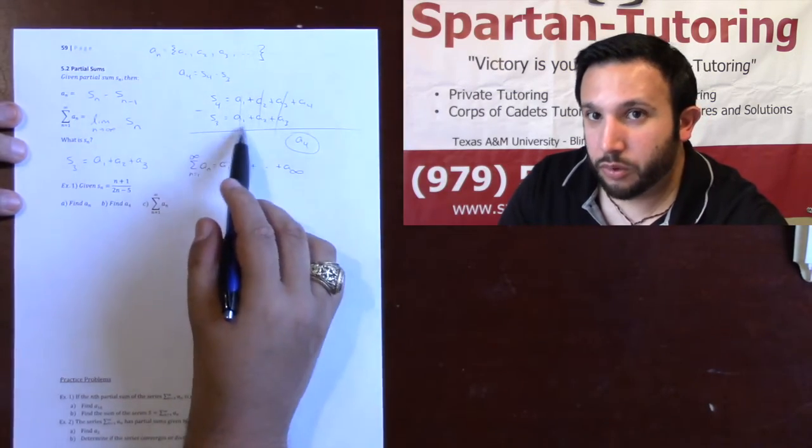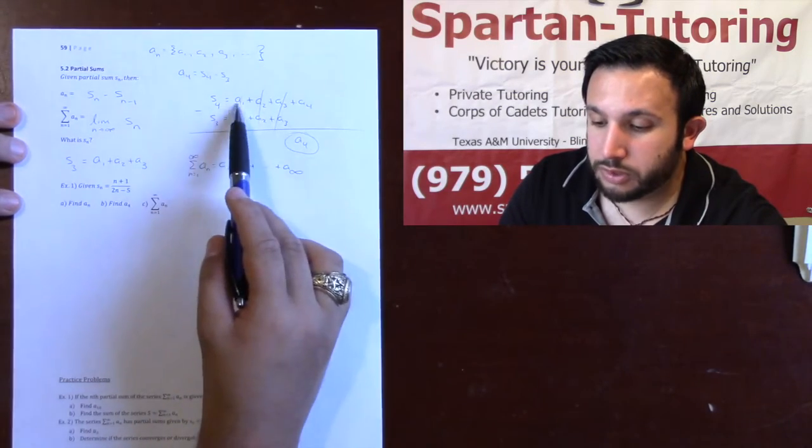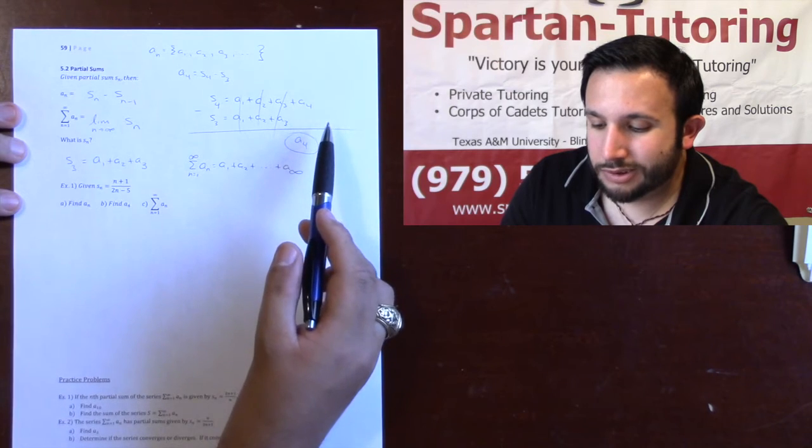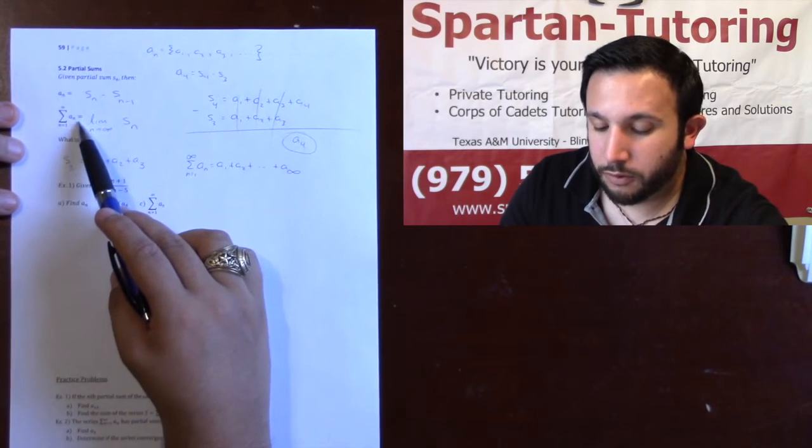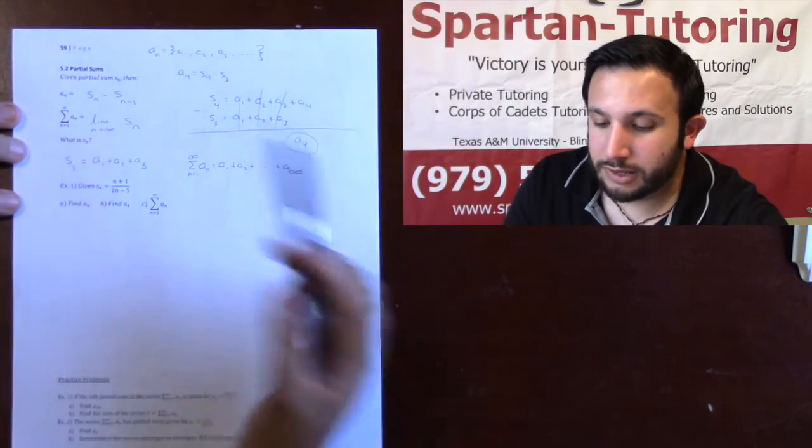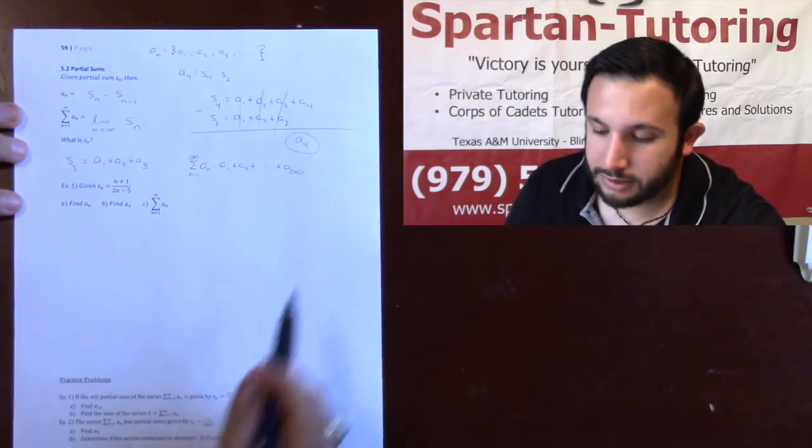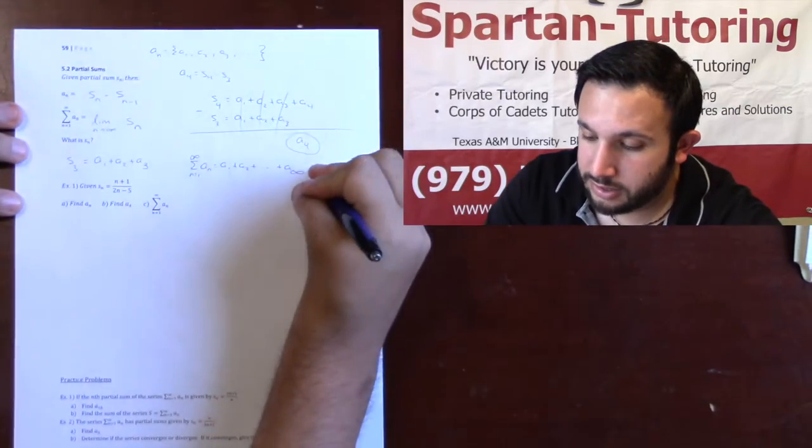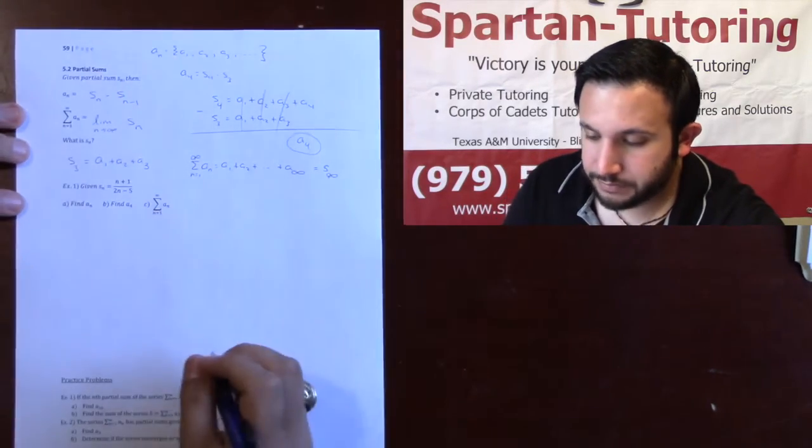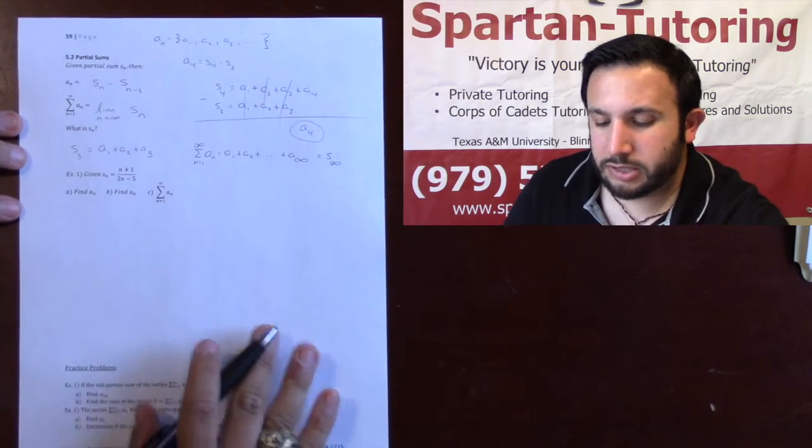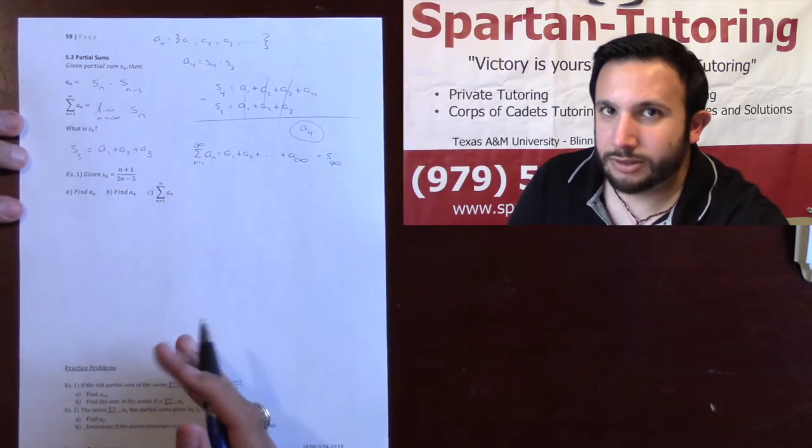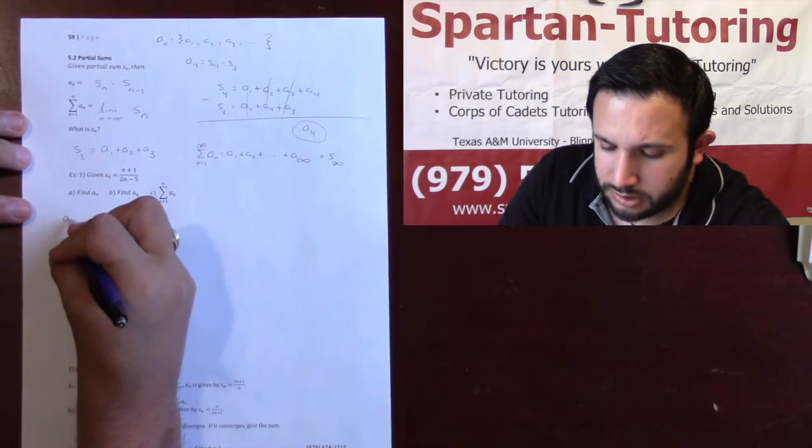So if S3 is A1 through 3, S4 is A1 through 4, wouldn't it make sense for the infinite sum from A1 through infinity to just be what you get when you plug infinity into Sn? I think so. That's why this is just S infinity. It's important to understand what a partial sum is. It makes these problems a whole lot easier rather than just blindly memorizing an equation.